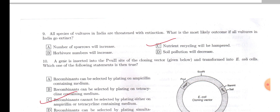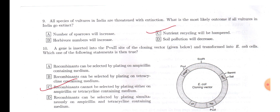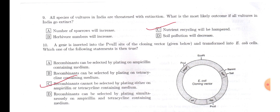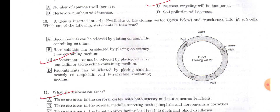Next, all the species of vultures in India are threatened with extinction. What is the most likely outcome if all vultures in India go extinct? So we know vultures play a major role in the ecosystem. They eat dead animals and thereby they play a major role in preventing some of the dangerous diseases mediated by these animals. They also help in nutrient cycling by digesting those animals or organic substances. So option C will be the answer: nutrient cycling will be hampered.